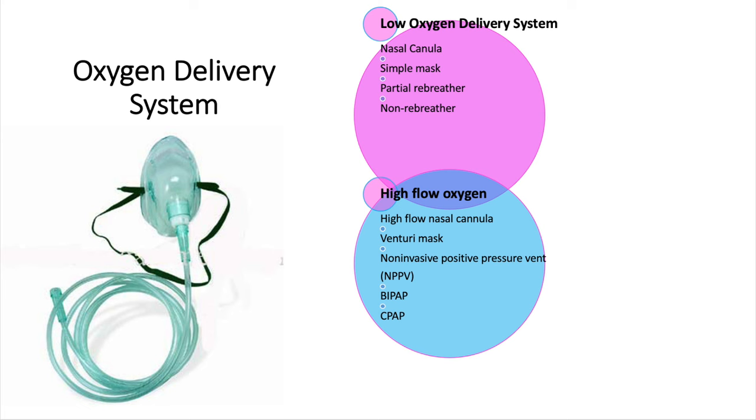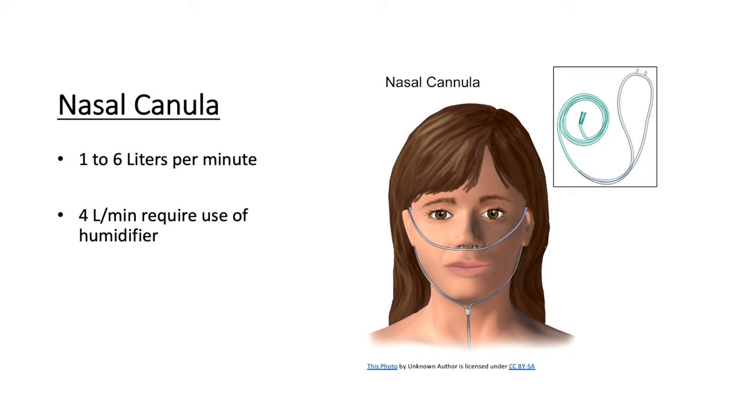With your nasal cannula, the rate should be between one to six liters per minute, but normally it's max four liters per minute with a humidifier to preserve the tissue integrity. If the patient requires more than four liters per minute, they may need an alternative mode of delivery or reassessment and reevaluation of the plan of care. You want to maintain stats greater than 92%, however this does not apply to your patient with a medical history of COPD.